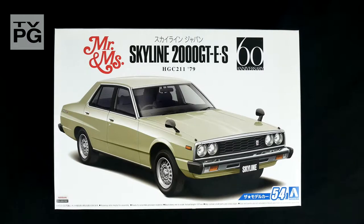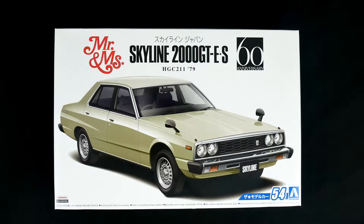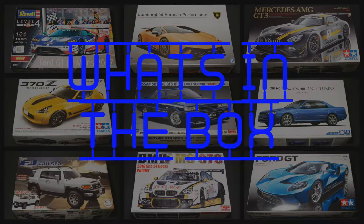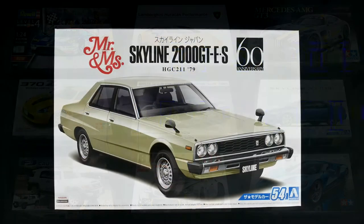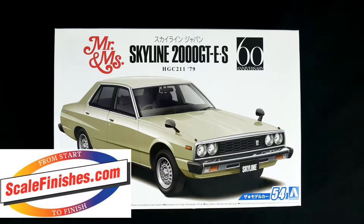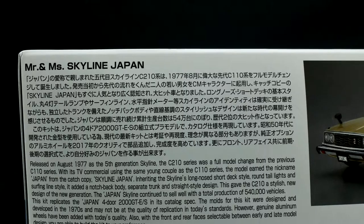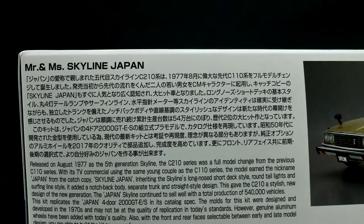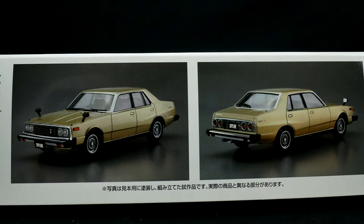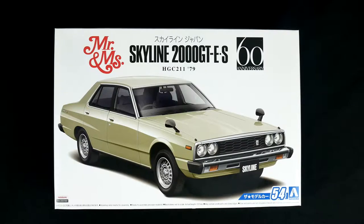Celebrating the 60th anniversary of the Nissan Skyline, it is today's What's in the Box. Hey everyone and welcome to the garage with today's What's in the Box, the Nissan Skyline 2000GT-ES HGC211 for the 1979 model year. This is part of Aoshima's 60th anniversary celebration of the Nissan Skyline.